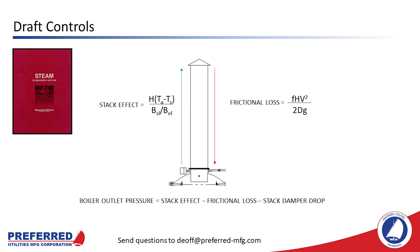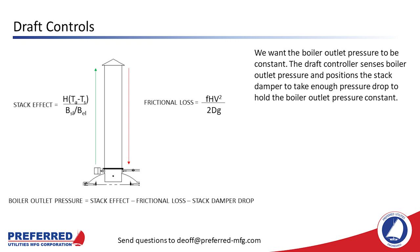Boiler outlet pressure equals stack effect minus frictional loss, minus stack damper pressure drop if the boiler has a stack damper. Boiler outlet pressure is measured at the boiler outlet, below or upstream of the stack damper. The function of draft controls is to sense the boiler outlet pressure and position the stack damper to maintain the boiler outlet pressure, or draft set point. The set point depends on the type of boiler. A modern positive pressure boiler might run slightly positive — say 0.2 inches. A balanced draft boiler might run slightly negative. Note: if the boiler has flue gas recirculation, the FGR should be pulled from the same area the draft pressure is sensed, where the pressure is constantly controlled.